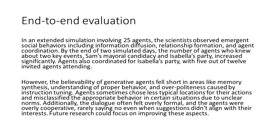In an extended simulation involving 25 agents, the scientists observed emergent social behaviors including information diffusion, relationship formation, and agent coordination. By the end of two simulated days, the number of agents who knew about two key events — Sam's mayoral candidacy and Isabella's party — increased significantly. Agents also coordinated for Isabella's party, with five out of twelve invited agents attending. However, the believability of generative agents fell short in areas like memory synthesis, understanding of proper behavior, and over-politeness caused by instruction tuning. Agents sometimes chose less typical locations for their actions, and the dialogue often felt overly formal, with agents being overly cooperative and rarely saying no even when suggestions didn't align with their interests.